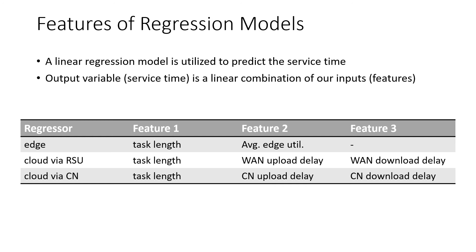Now I want to explain the regression models used for each option. We used a linear regression model because we see that the service time is a linear combination of our features. In this table, you can see the features we used in our regression models. The task length is the main factor that has an impact on the service time, so we use it for all options. Edge server utilization is crucial for edge servers but not important for cloud servers. From the cloud point of view, the network delay is more significant.